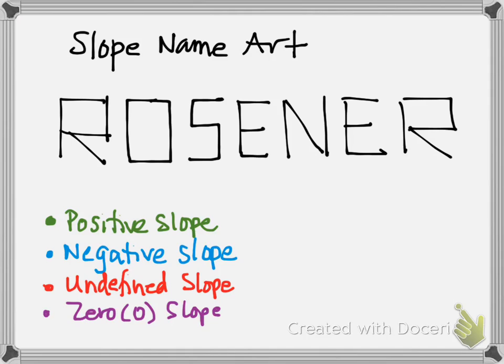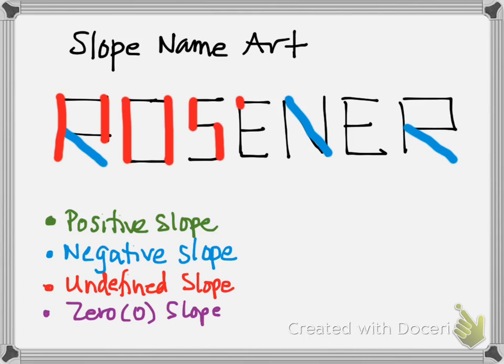So I'm going to look for negative slopes and highlight them in the negative color. Undefined slopes are going to be all the slopes that are vertical. And then in purple are going to be all the slopes that are zero slope.